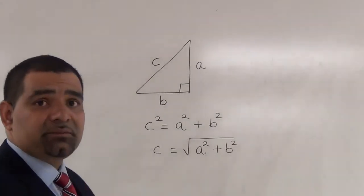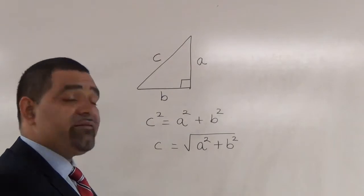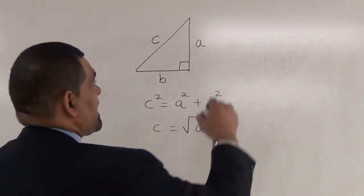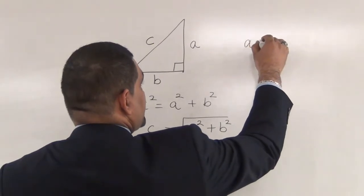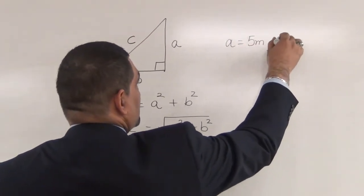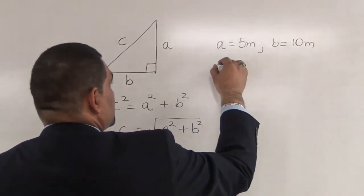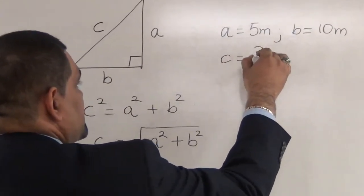Now, from this formula, I'm going to give A a value and B a value and solve for C. So, for example, if I say A is equal to 5 meters and B is equal to 10 meters, we're going to now solve for C.